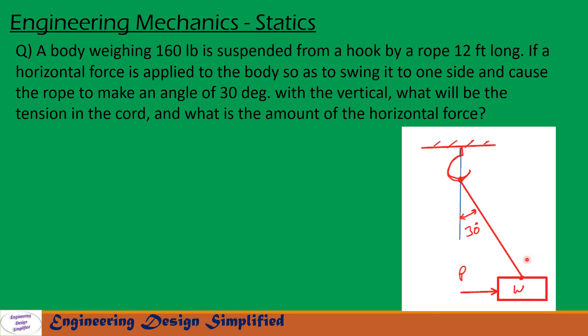Here a weight W is hung by this string and a force P is applied horizontally so this cord makes 30 degrees angle with the vertical. In this situation, what will be the P and what is the tension in this cord? In the coming slides, let us see how to calculate.